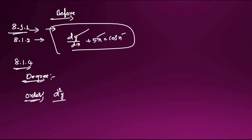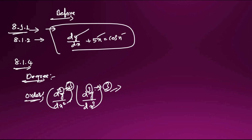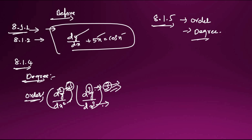For example, d²y/dx² — this is the order here. Degree means the whole power — for example, power of 3. Order means how many derivatives deep, like d³y/dx³. In Section 8.1.5, many examples are given — 1 through 5 — where you will find what is order and what is degree. The formation of differential equations will be done later.